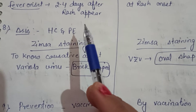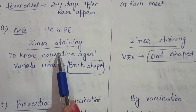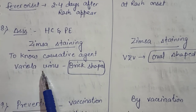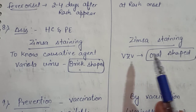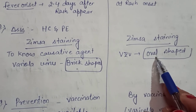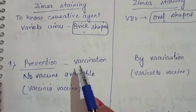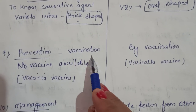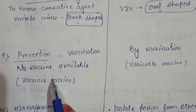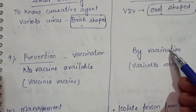Diagnosis involves history collection and physical examination. We can identify the virus using Giemsa staining.